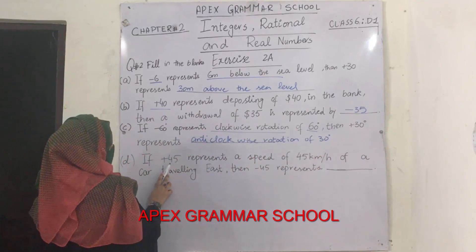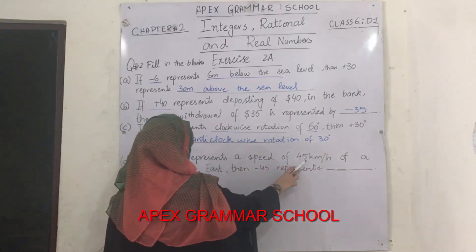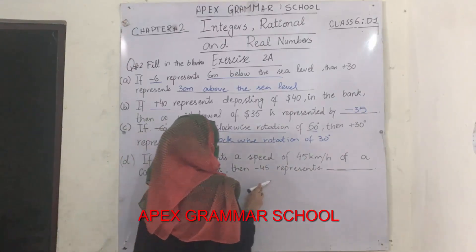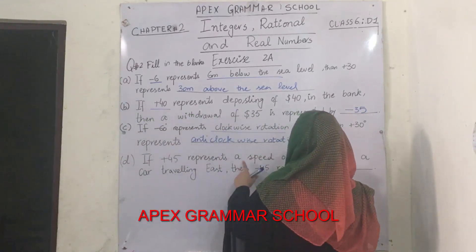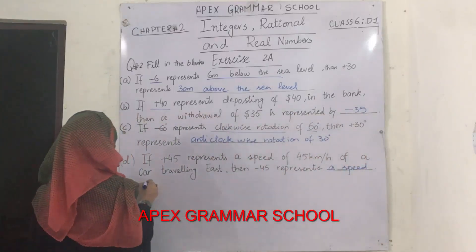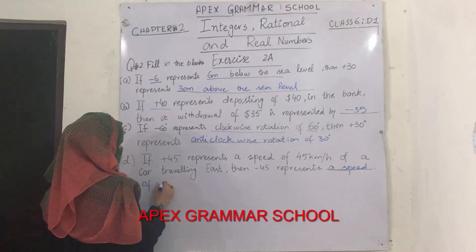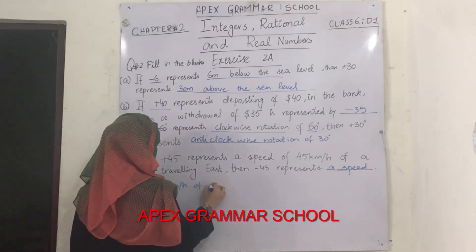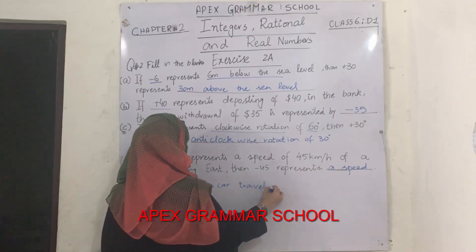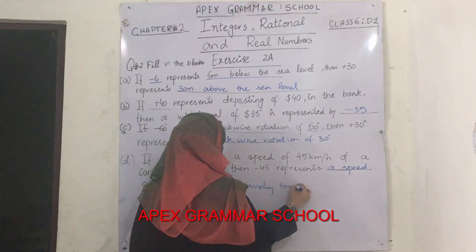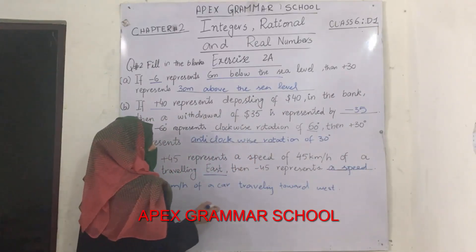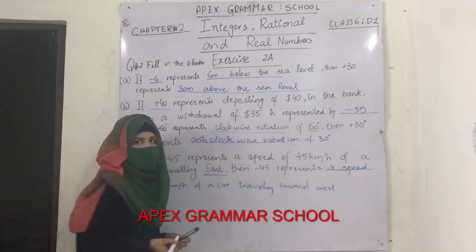Part D: if plus 45 represents a speed of 45 kilometers per hour of a car travelling towards the east, then the opposite direction is west, so we have to use west over here.